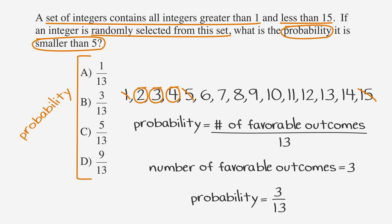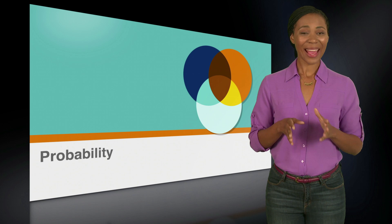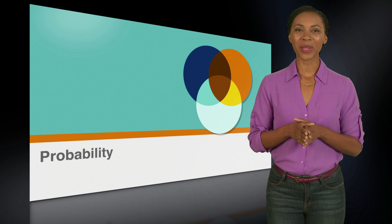Our equation is now probability equals 3 over 13. Looking at the answer choices, B is 3 over 13. That's our answer. Circle and celebrate. We were able to solve this problem quickly and correctly using our formula for probability.